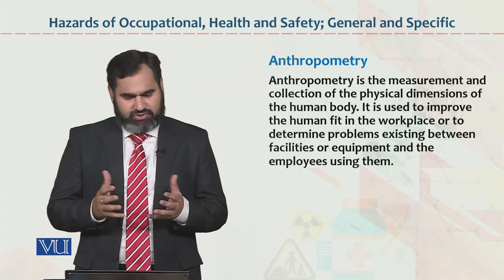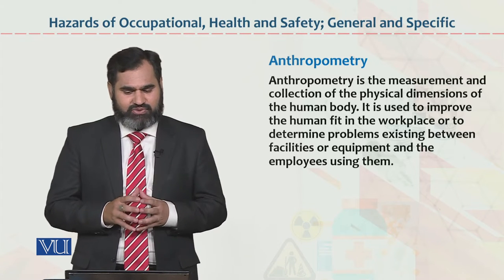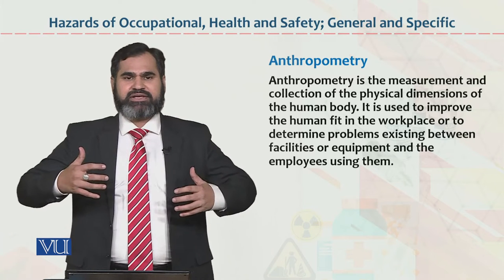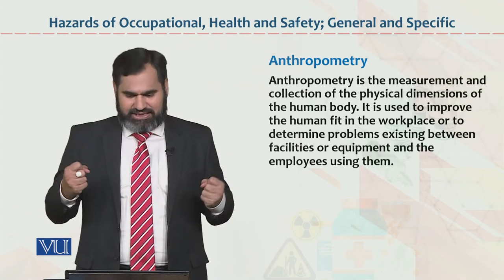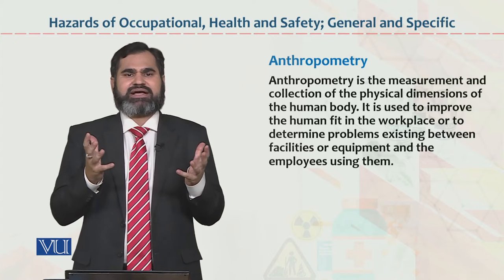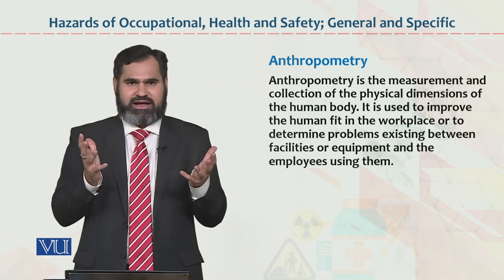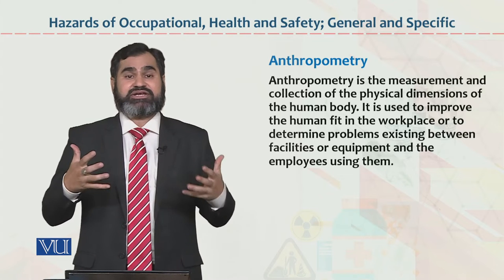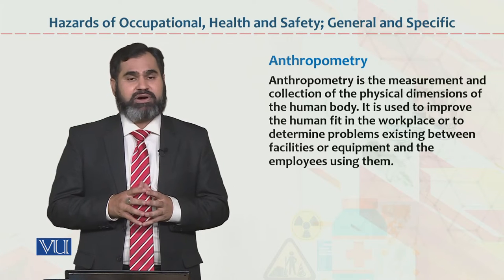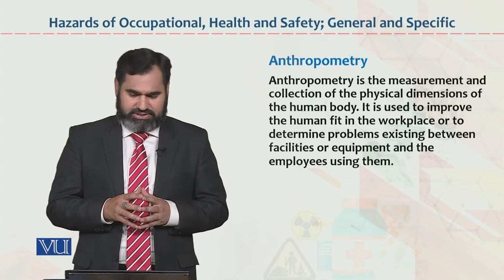Anthropometry. Anthropometry ko agar dekha jai, it is the measurement and collection of the physical dimensions of a human body. Human body ke jo hamare organs hain, in ki jo physical dimensions hain — ke kis tarah ke aapke naak hain, kis tarah ke aapke haath hain, kaan hain, hands hain — these physical dimensions. Jab hum human body ke tamam aspects ko study karte hain, toh is ko hum log anthropometry bolte hain.